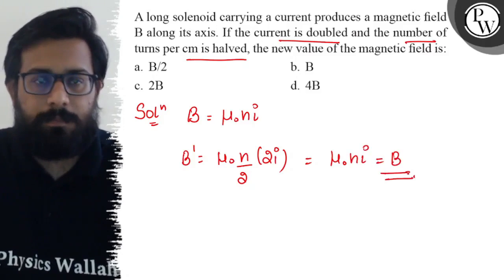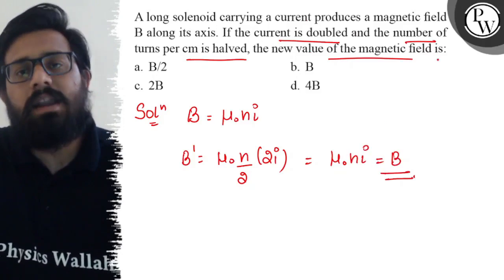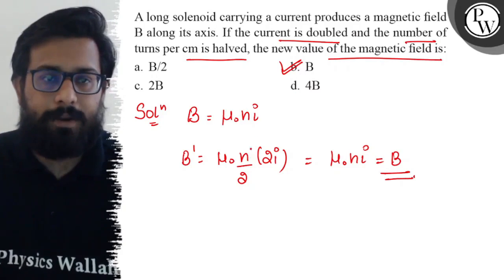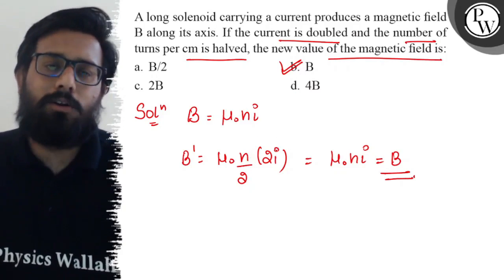So the new magnetic field you'll get the value of again B. Because if you have the number of turns per centimeter halved and current doubled, there will be no change.